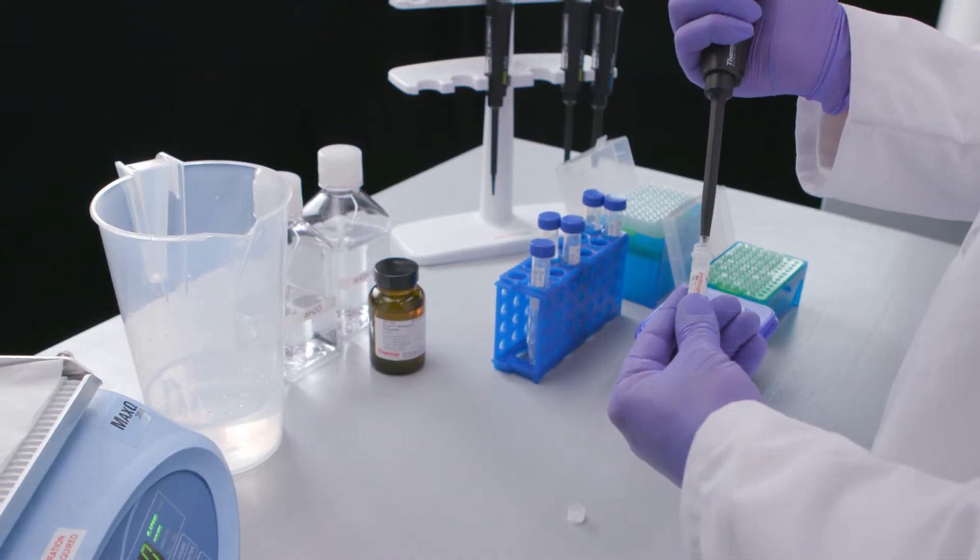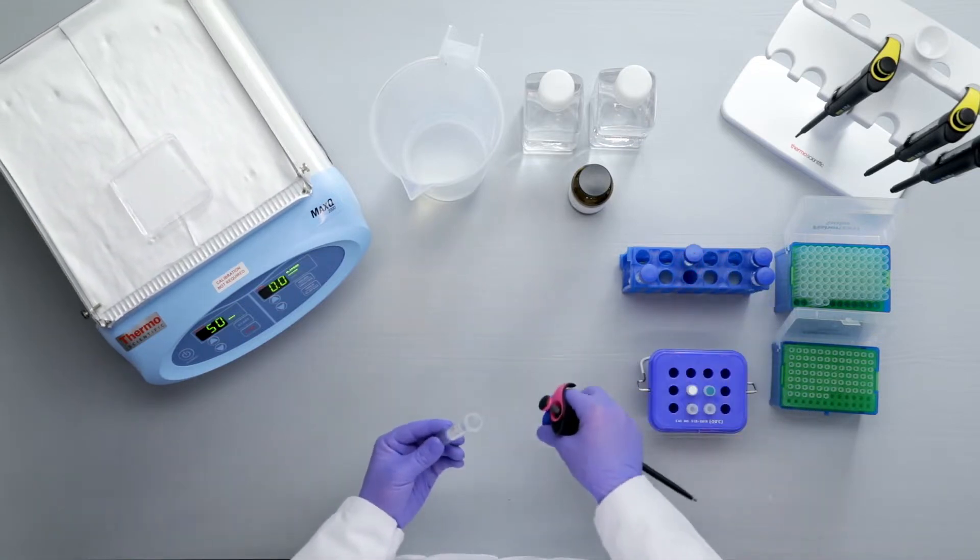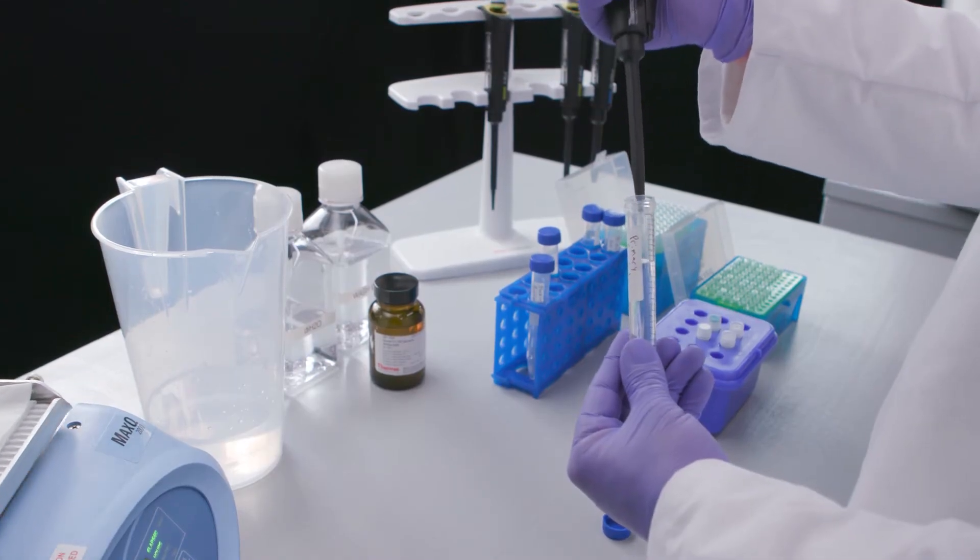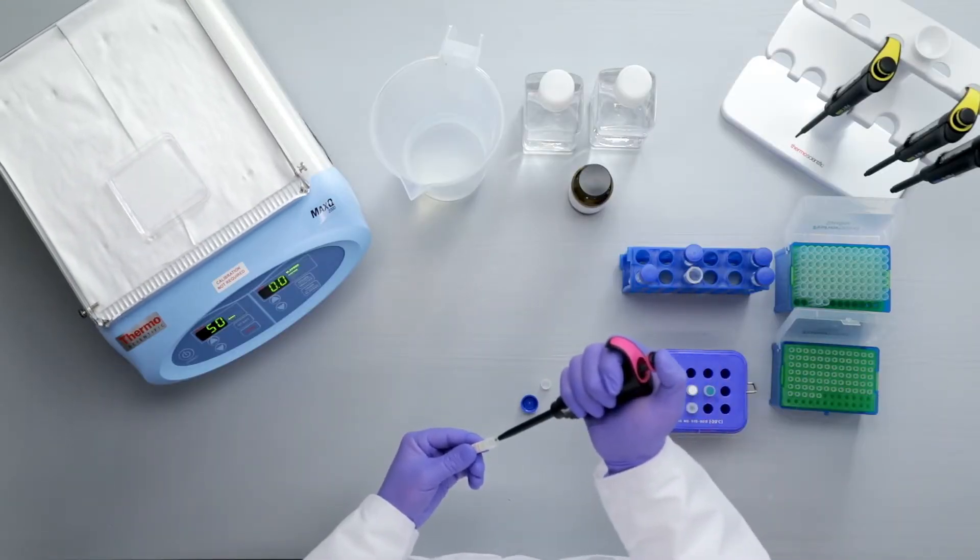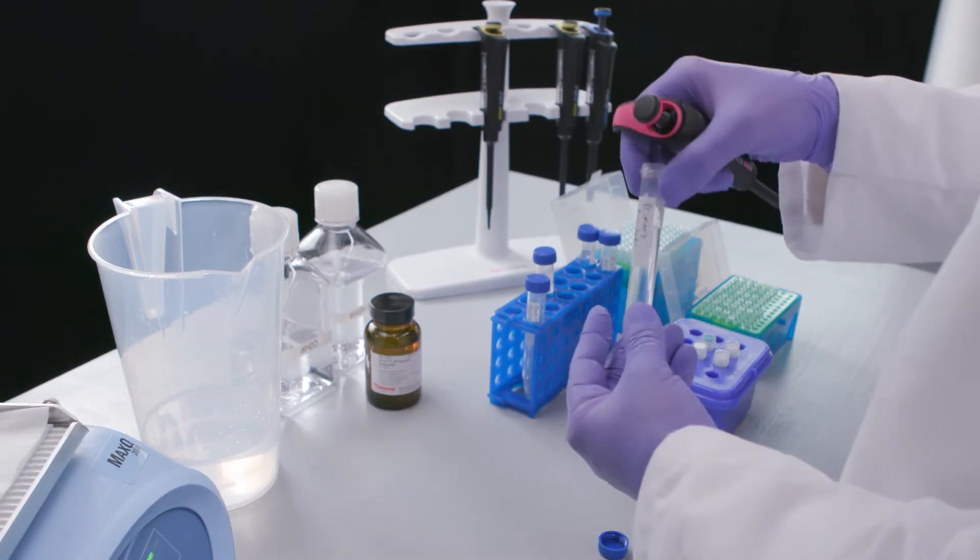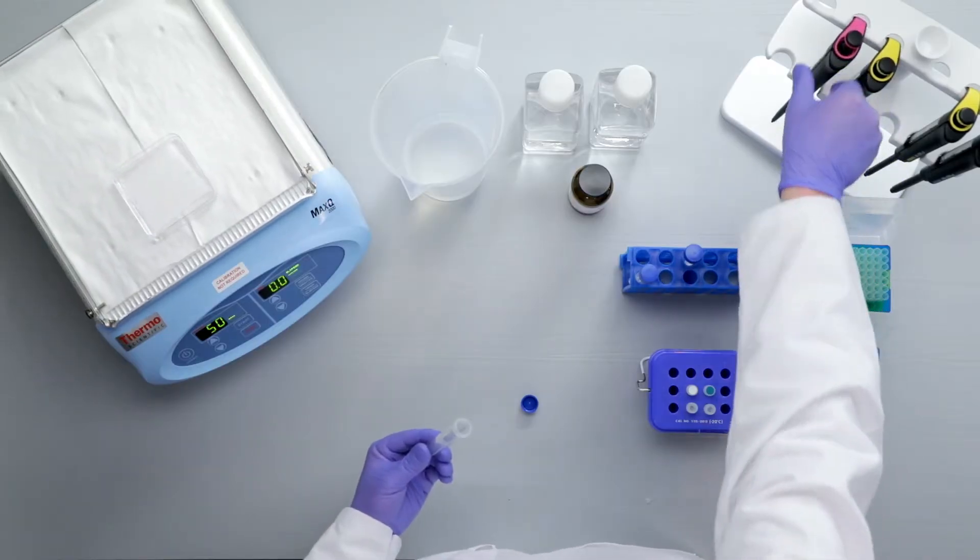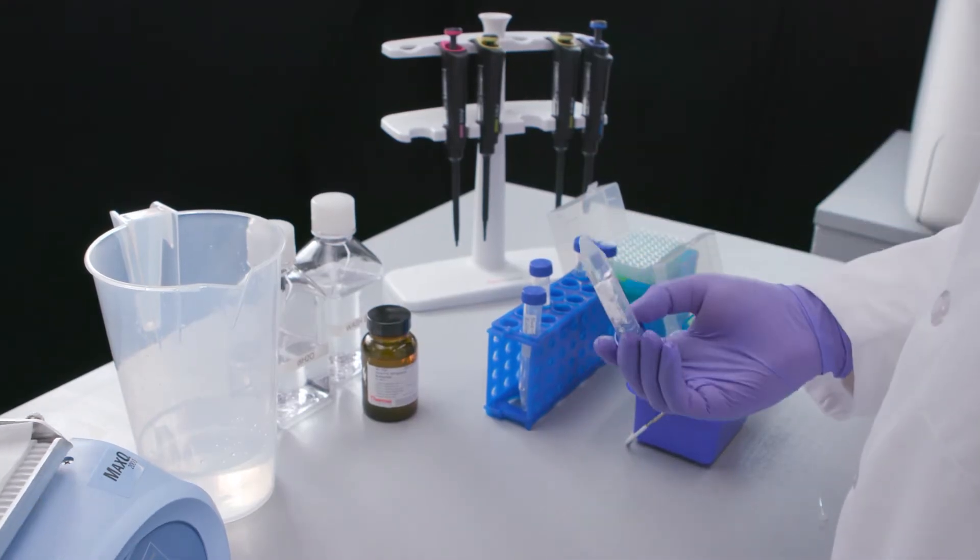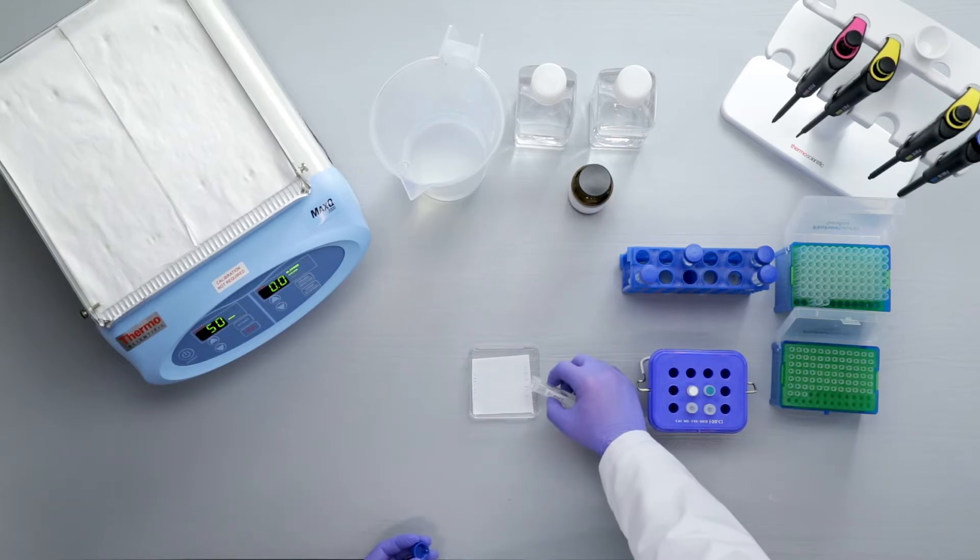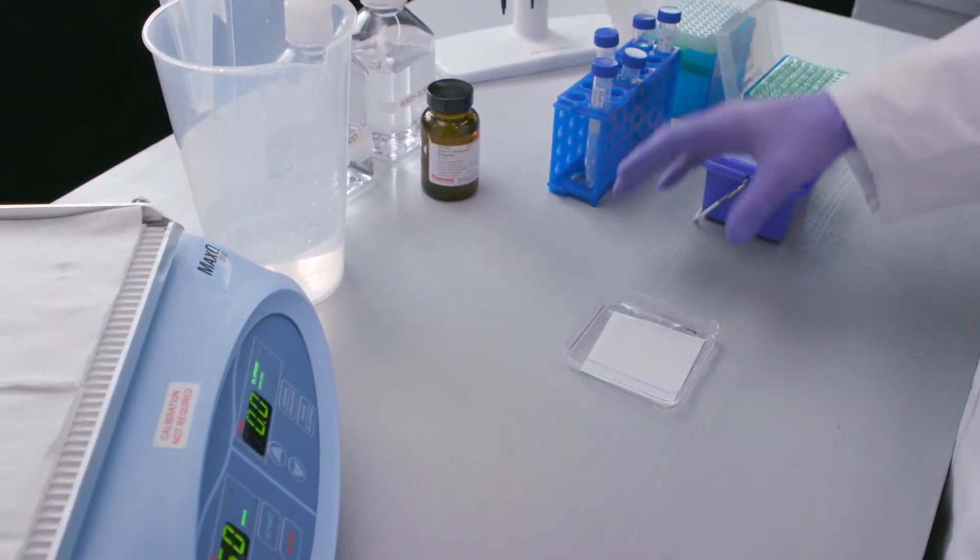Dilute the two primary antibodies per supplier recommendations in sufficient volume of blocking buffer. Incubate the membrane with gentle agitation with the primary antibodies for one hour to overnight. When incubating overnight, place at 4 degrees Celsius.